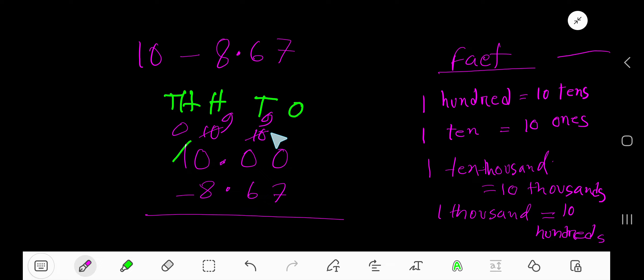Now take away seven ones from ten ones - you will have three ones. Take away six tens from nine tens - you will have three tens. Then bring down this decimal and take away eight hundreds from nine hundreds - you will have one hundred. That is 1.33, which is your answer.